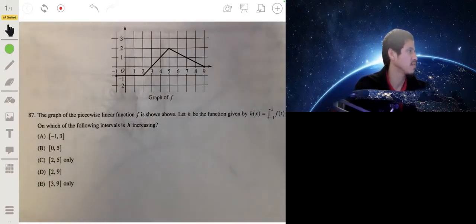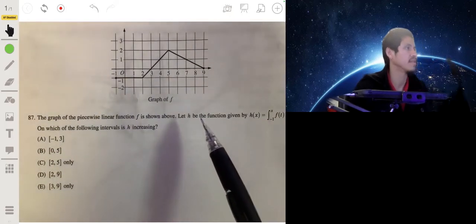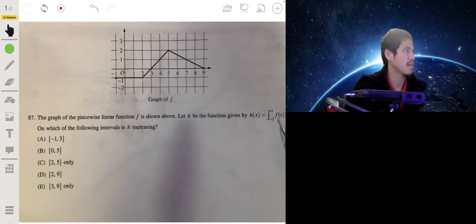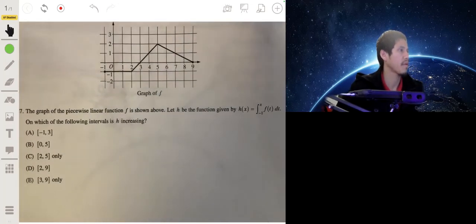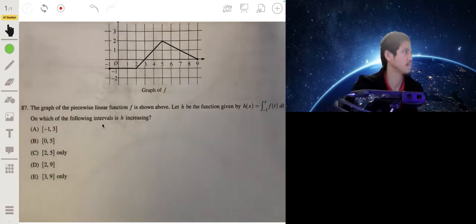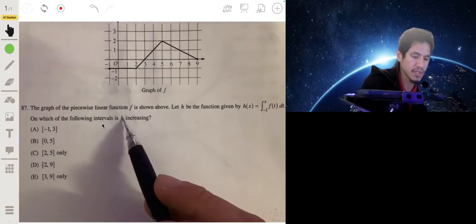Alright, so the graph of the piecewise linear function f is shown here and let's h be the function given by the integral from negative 1 to x of f of t. On which of the following intervals is h increasing?